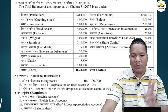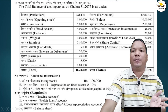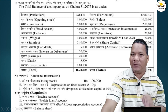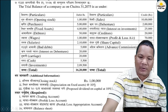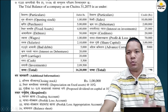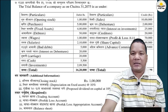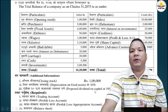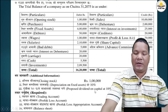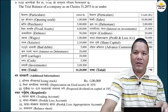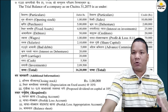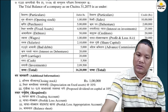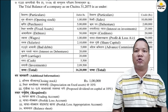Depreciation on fixed assets at 10%: fixed assets 4 lakh, 10% depreciation goes to the debit side of P&L account, and on the balance sheet assets side it is deducted from fixed assets. For proposed dividend: proposed dividend goes to the debit side of the appropriation account, and on the balance sheet it appears on the liabilities side.